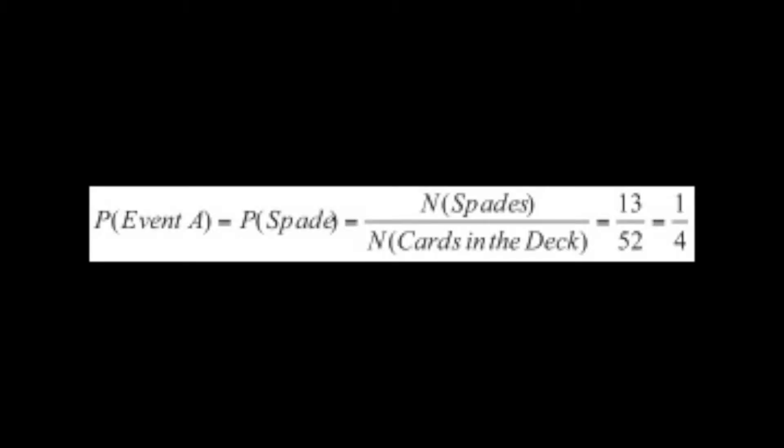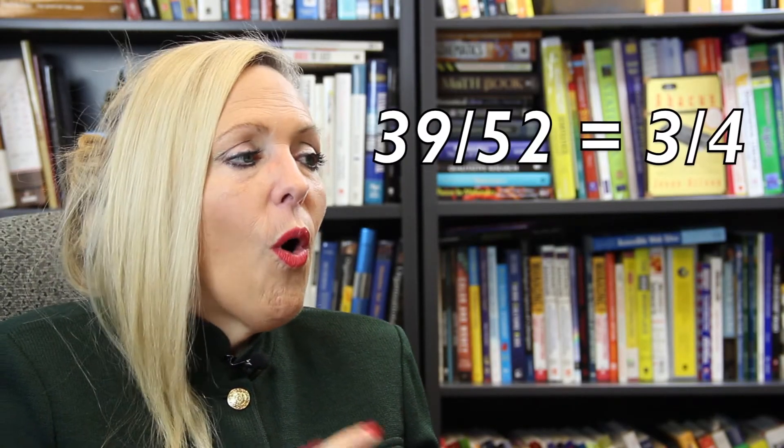So, if the event A is getting a spade in a standard deck, then the probability of A equals the probability of getting a spade, which equals the number of spades divided by the number of cards in the deck, or 13 out of 52, which is 1 fourth. The complement would be the probability of not getting a spade, which is the number of cards that are not spades, diamonds, hearts, and clubs, which is 39 out of 52, or 3 fourths.